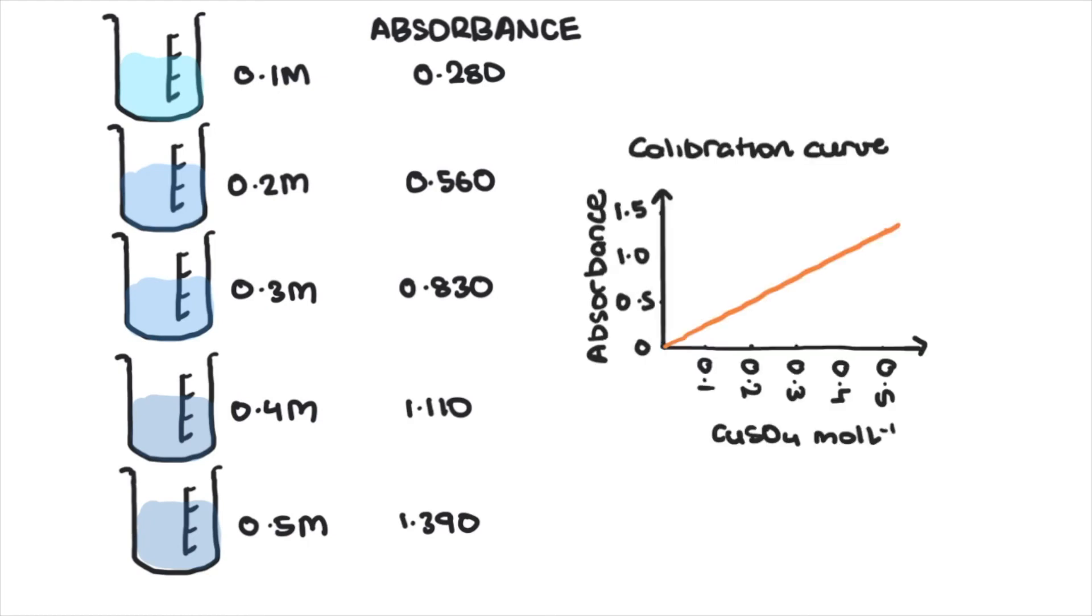You plot these on an absorbance graph and now you can compare the absorbance of your copper sulfate solution to it. So if the absorbance is 0.5 of your solution, then it has a concentration of, looks like, 0.18 moles per liter.